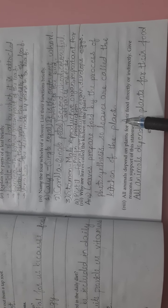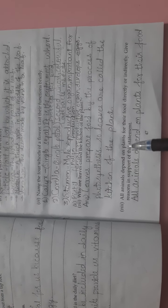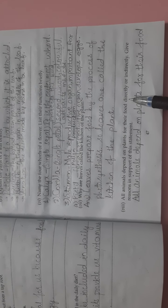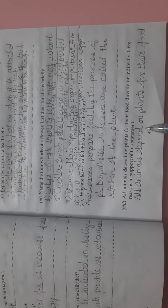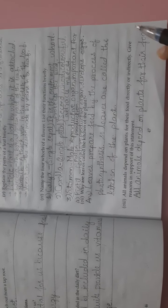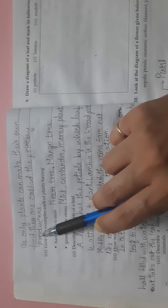Eighth, all animals depend on plants for their food directly or indirectly. Give reasons in support of this statement. Answer: All animals depend on plants for their food as only plants can make their own food and they are called the primary producers.